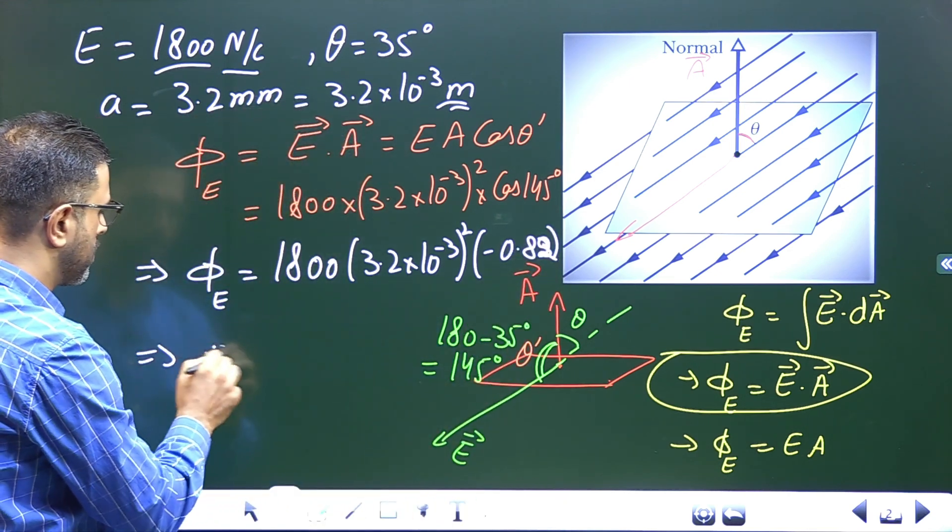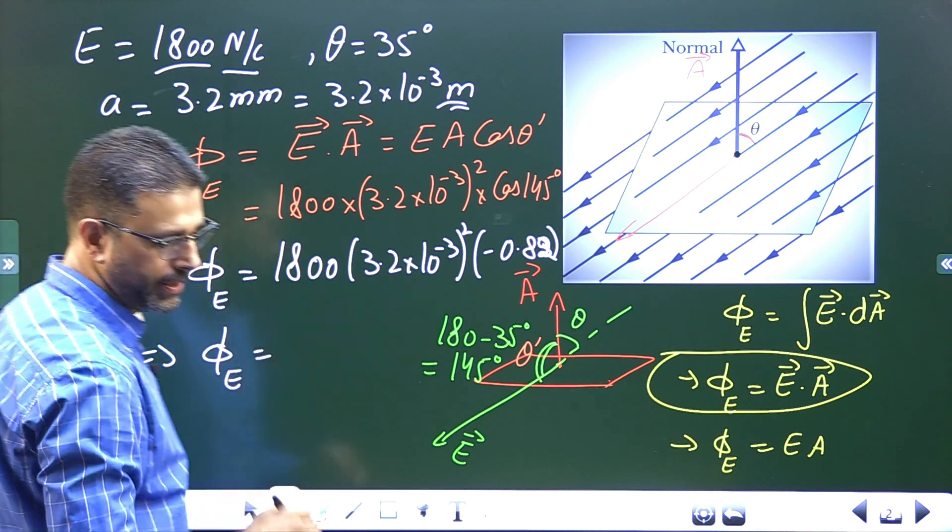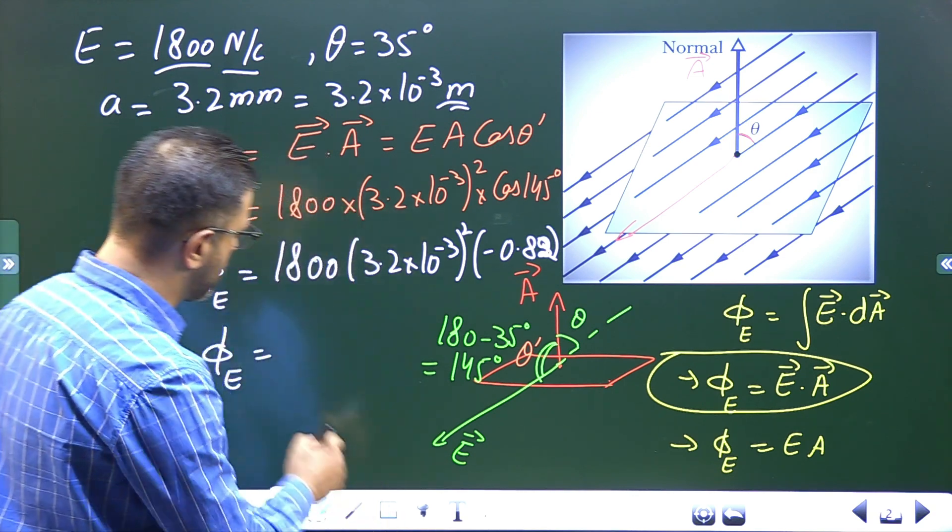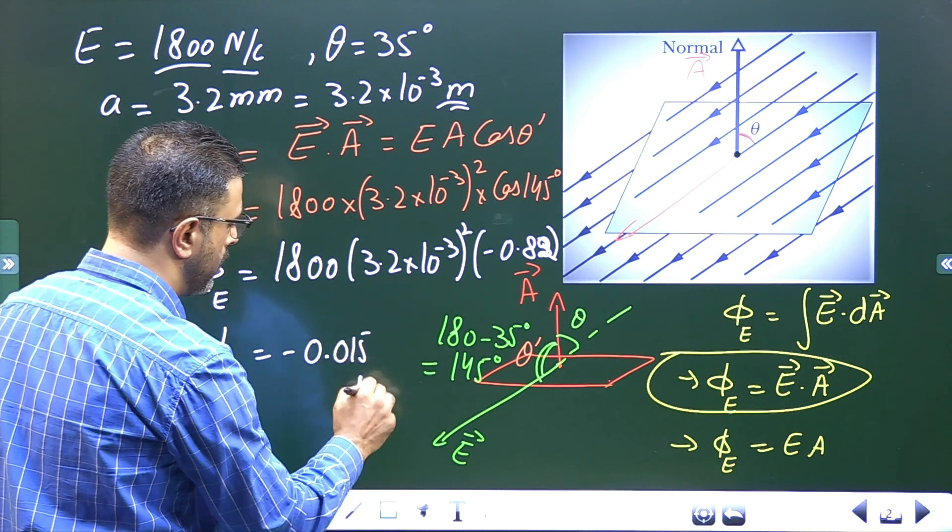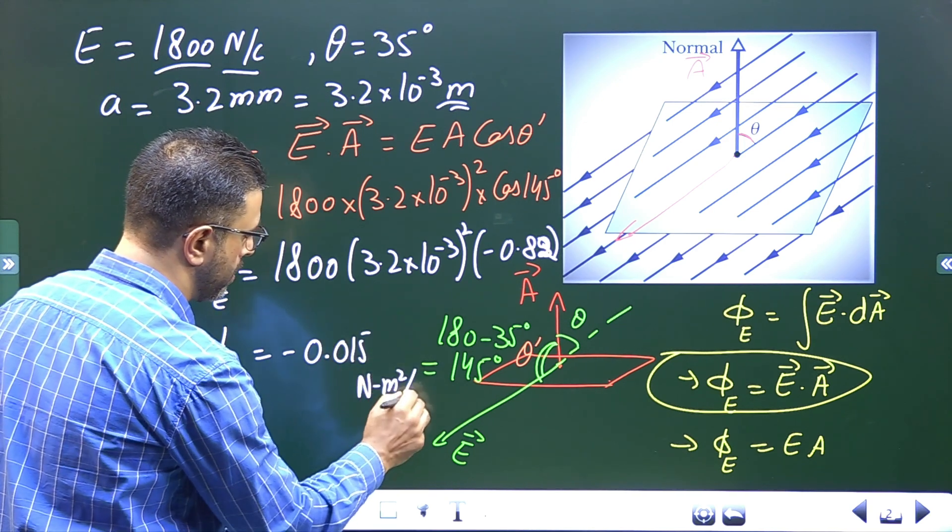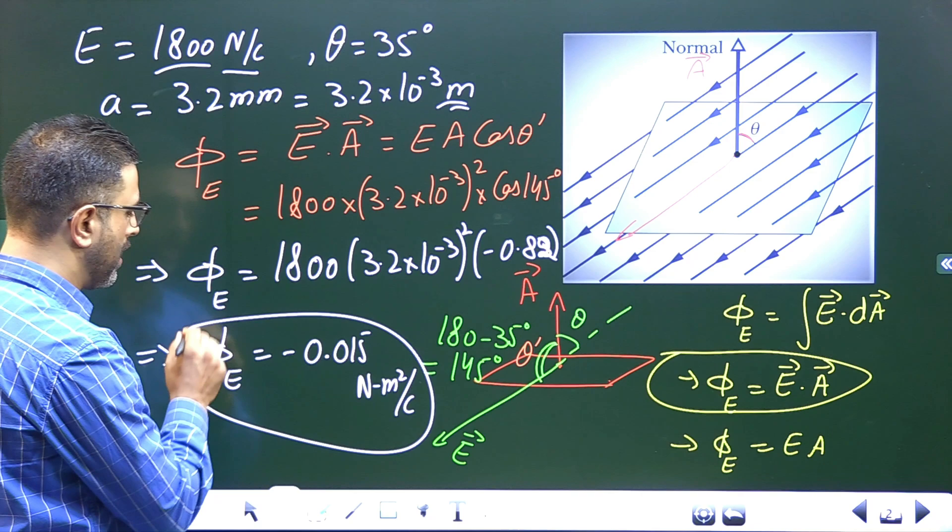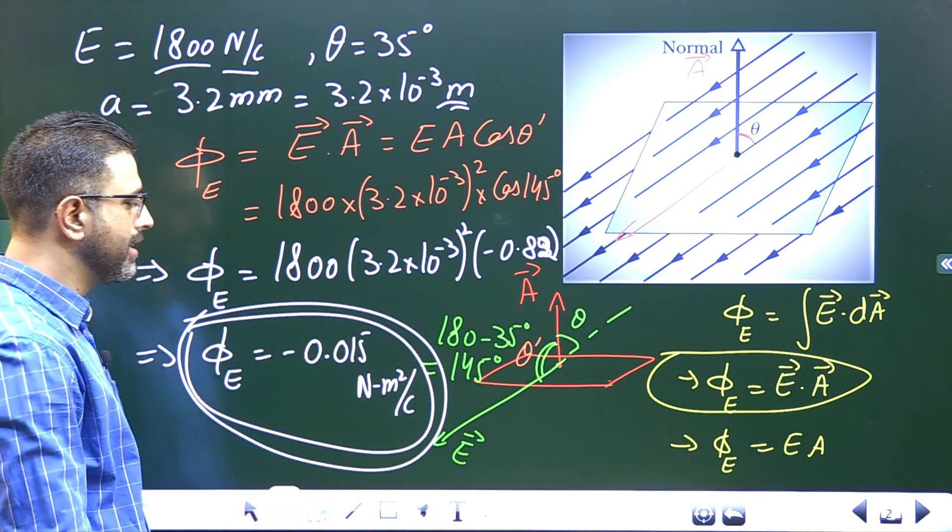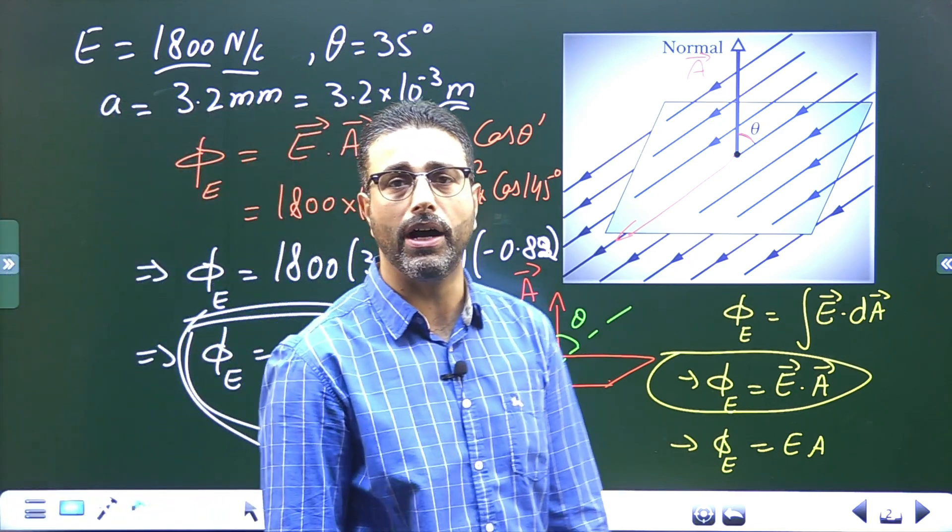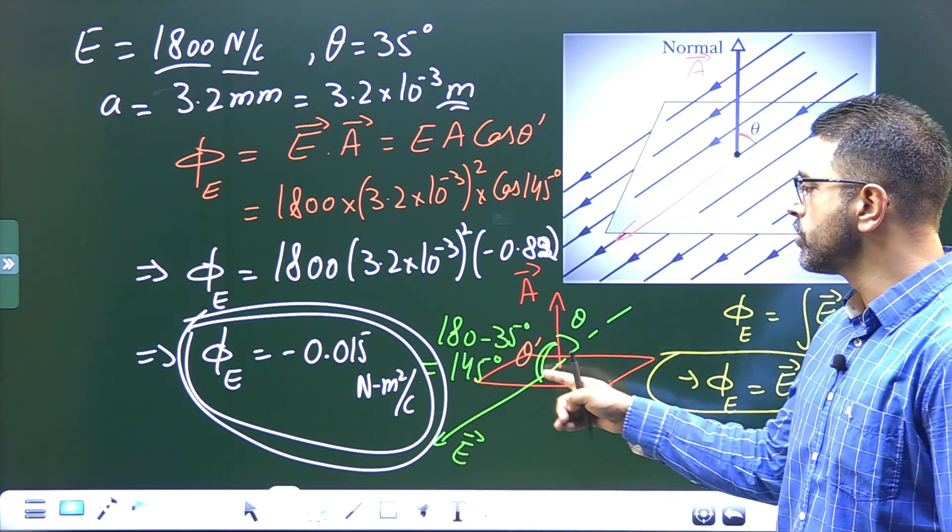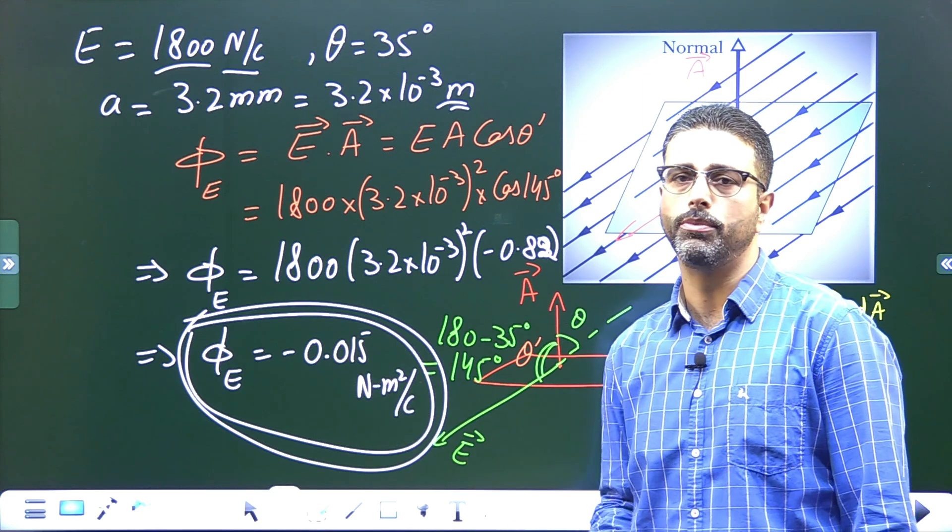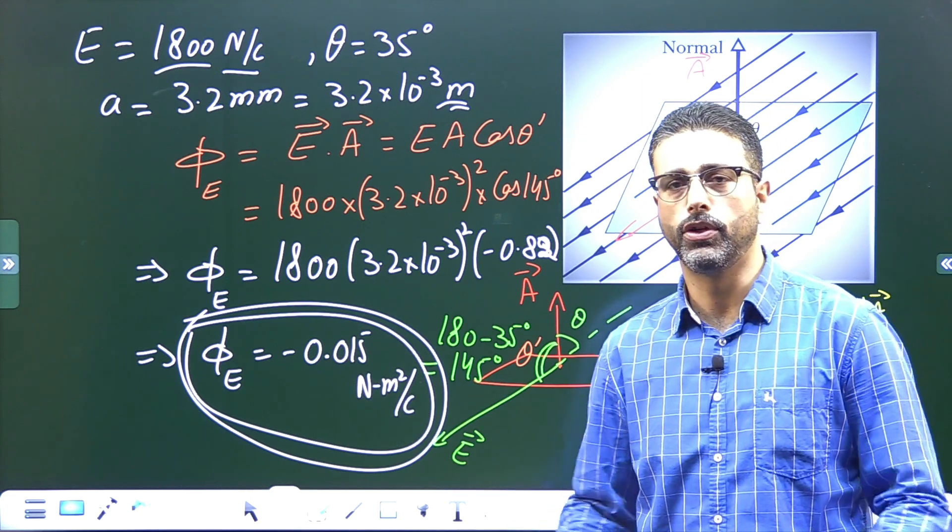So this comes out to be, I have worked it out, this is minus 0.015 Newton meter square per Coulomb. So flux through this surface is minus 0.015 Newton meter square per Coulomb. Is that fine? Angle is obtuse, that's why flux comes out to be negative. Fine? Okay.